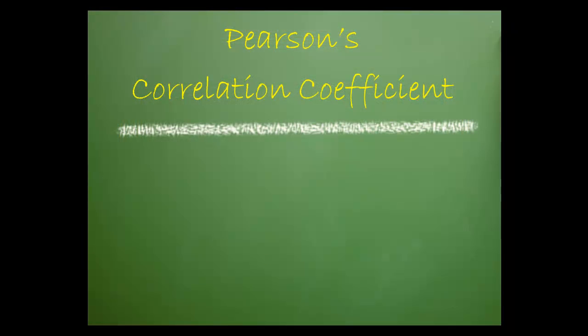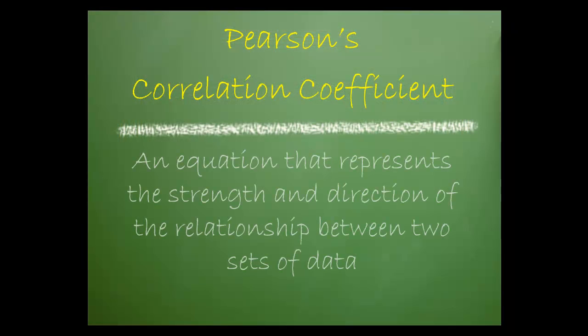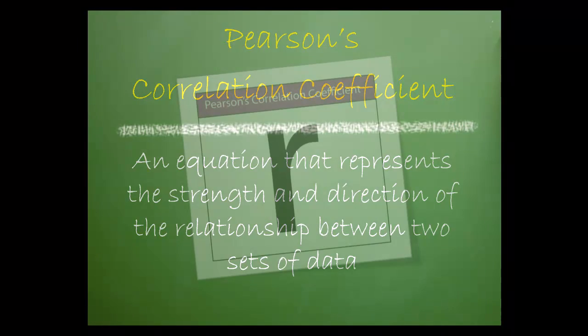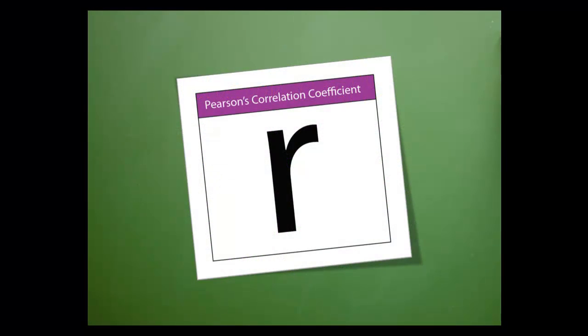The Pearson's correlation coefficient is an equation that represents the strength and direction of the relationship between two sets of data. The coefficient is often represented with an r.